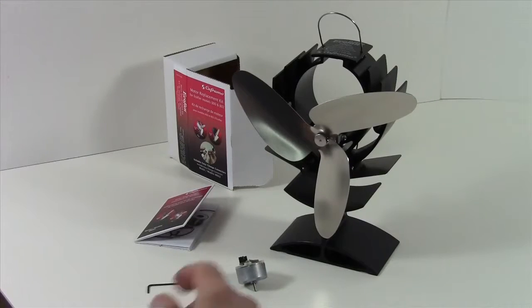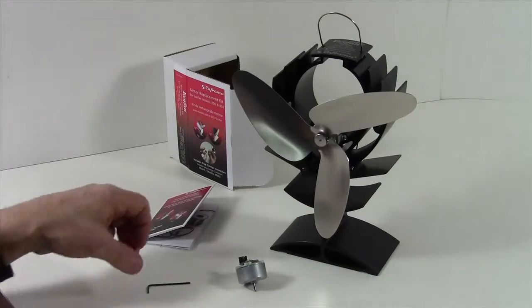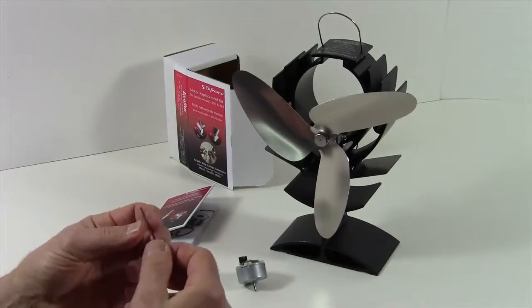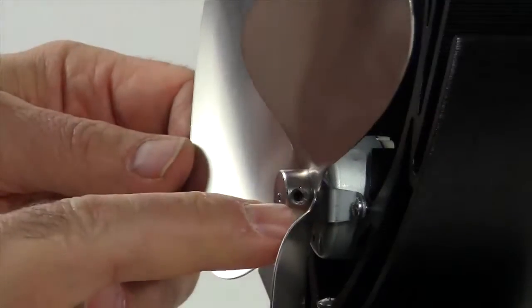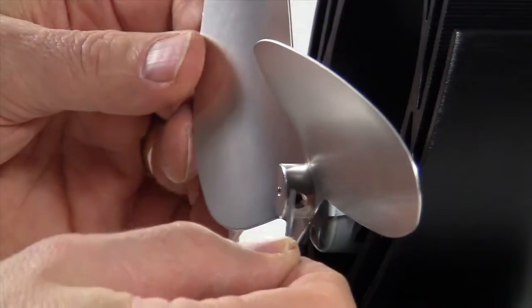The first step is to remove the blade from the ecofan. To do that we're going to use the allen key and insert it into this tiny hole located on the blade.